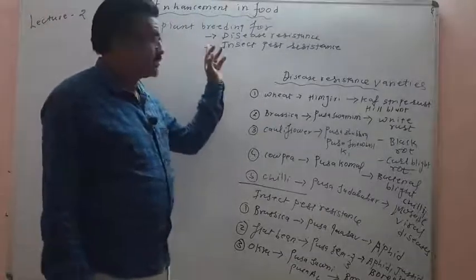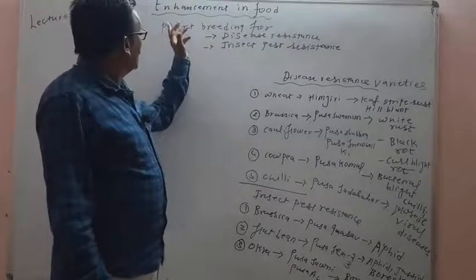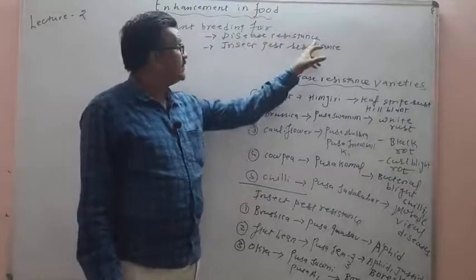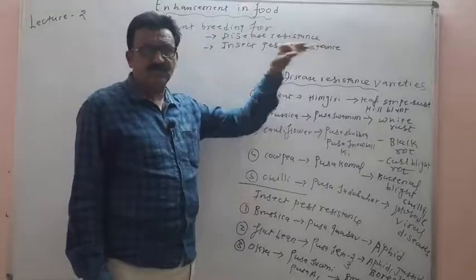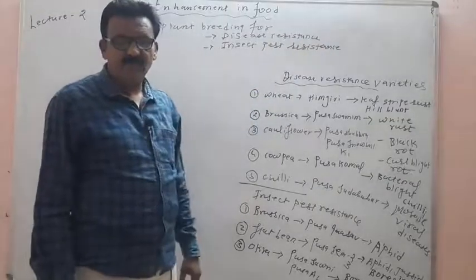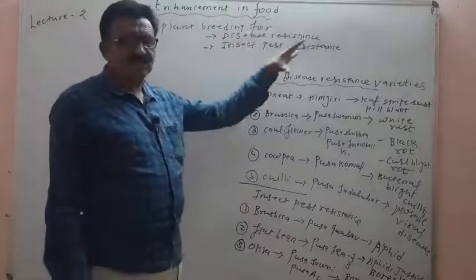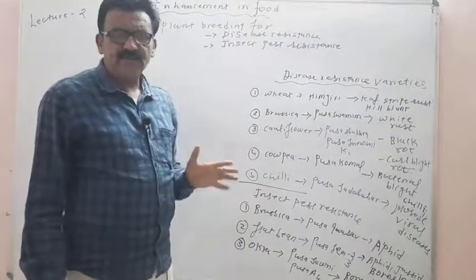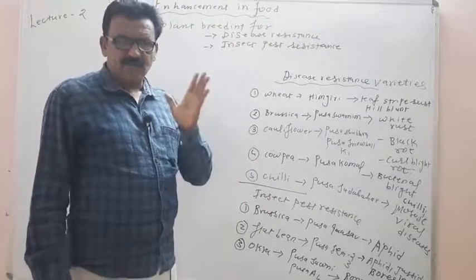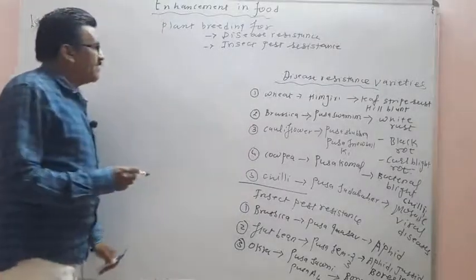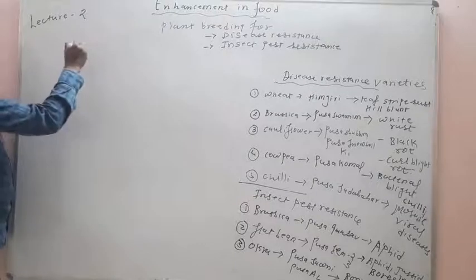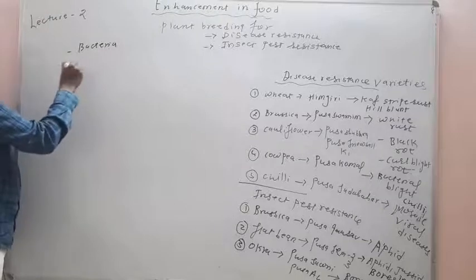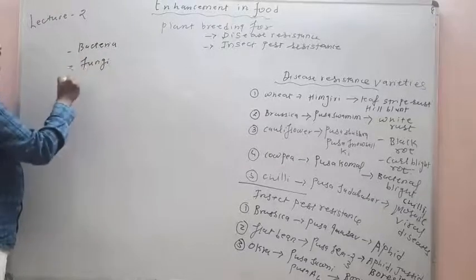Today we will discuss the second lecture on plant breeding for disease resistance and insect pest resistance varieties. Plant pathogens include bacteria, fungi, and viruses.